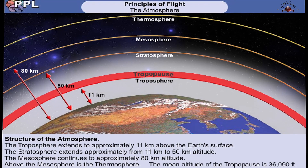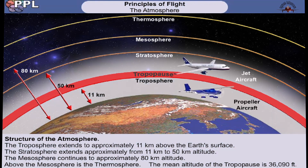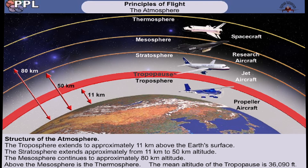Between the troposphere and the stratosphere there is a boundary known as the tropopause. The height of the tropopause varies but averages out at 36,090 feet. Aircraft are limited to flight in the troposphere and the stratosphere only. Rocket research aircraft and spaceships fly in the mesosphere and thermosphere.